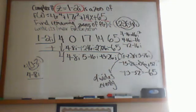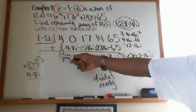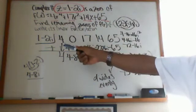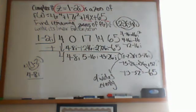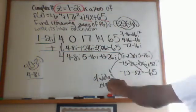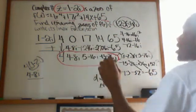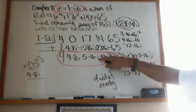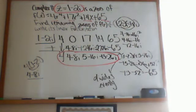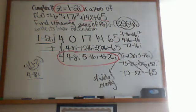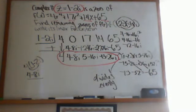Since 1 minus 2i is proven to be a zero and it divides evenly, by the complex conjugate theorem, 1 plus 2i is automatically also a zero. I'm going to take 1 plus 2i, put it in the corner box, and use the bottom-row values from the first division as the new coefficients. Take about 30 to 45 seconds to write that down — this might end up being a two-video problem because it's quite long.